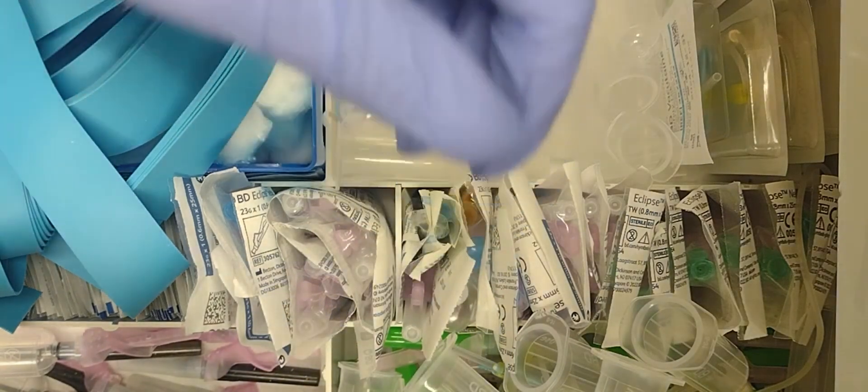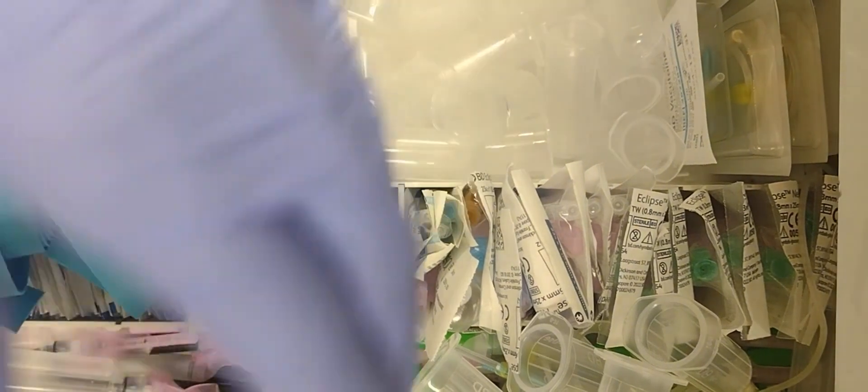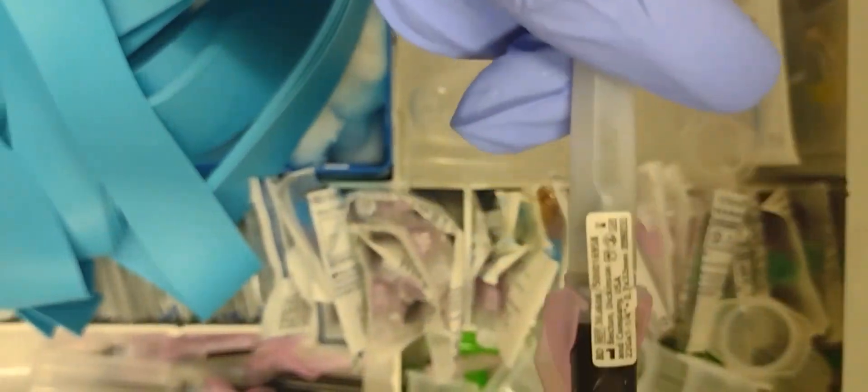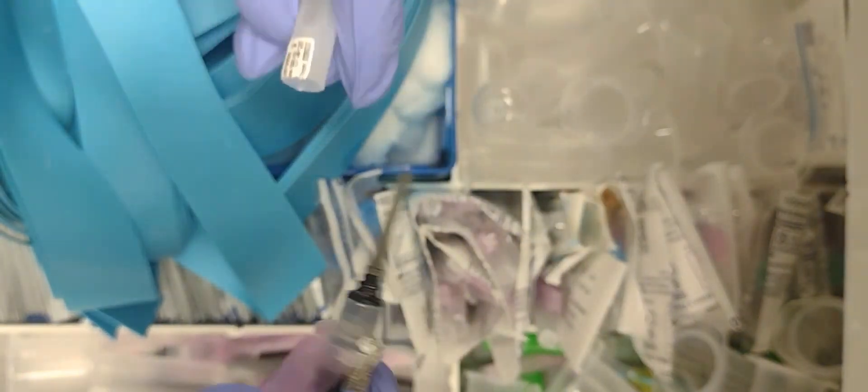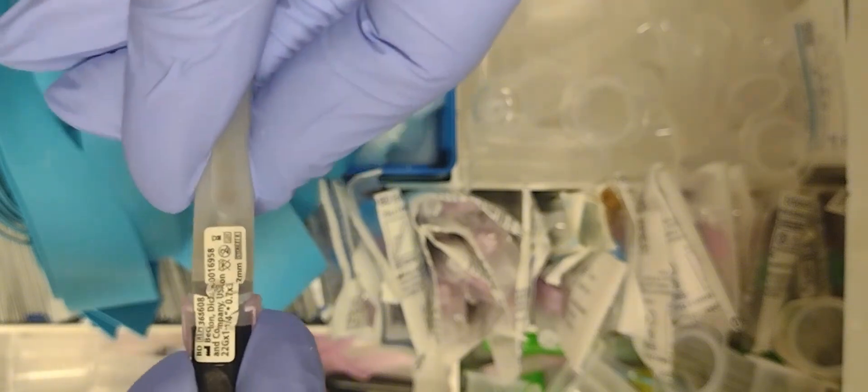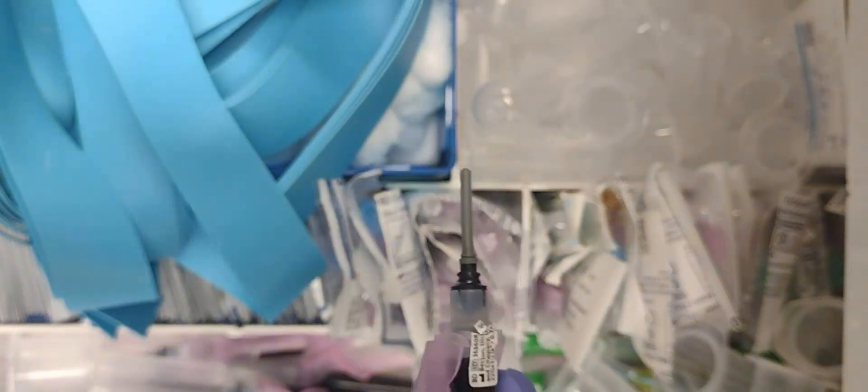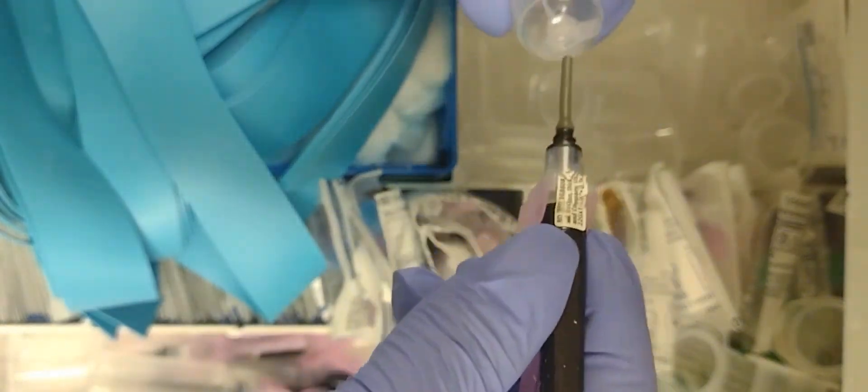So I did one. I'm going to do another one. So as you can see, this 22 gauge needle, all you do is remove the right cap like so, twist and remove, twist the Huber on.